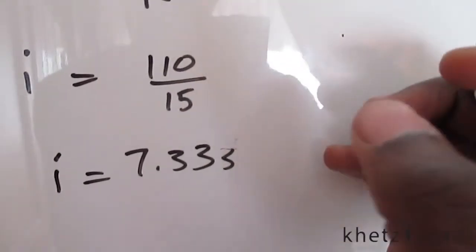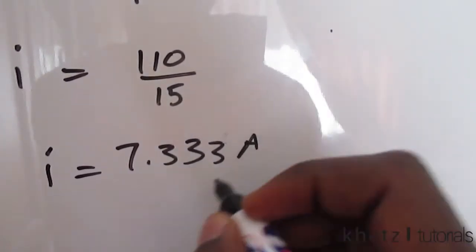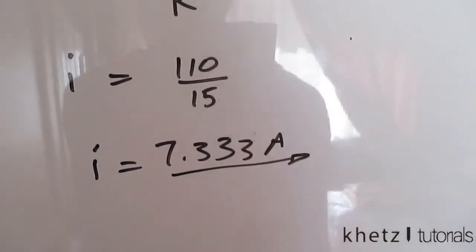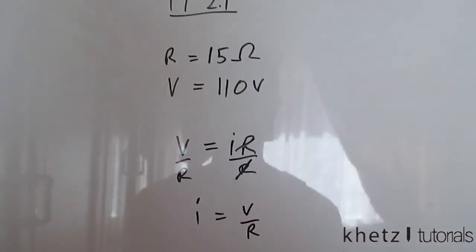So we can just leave it like this: 7.333 amperes. And that is basically it.